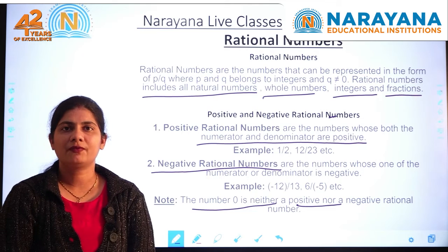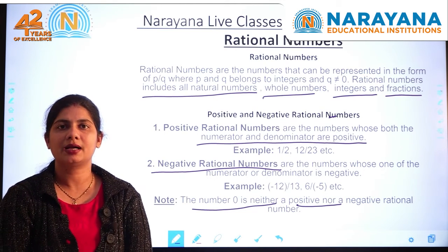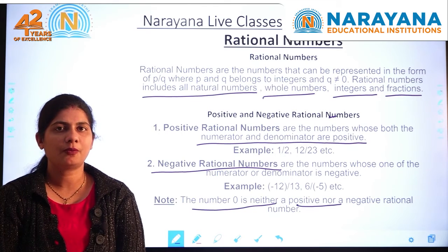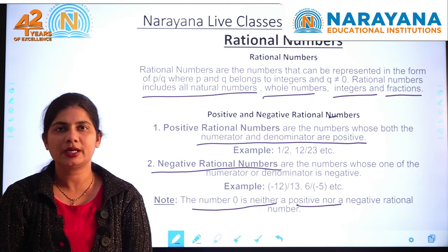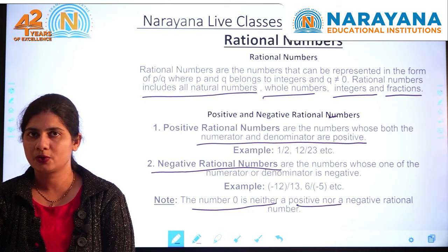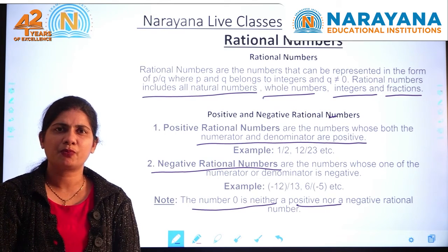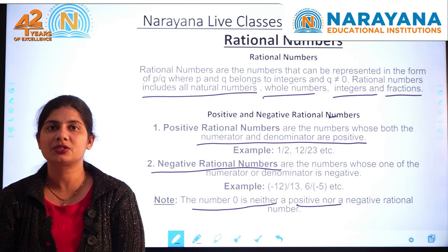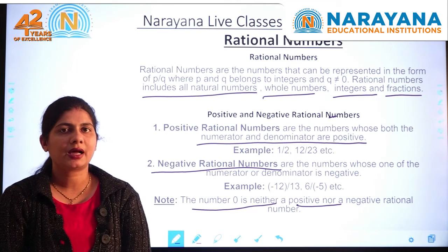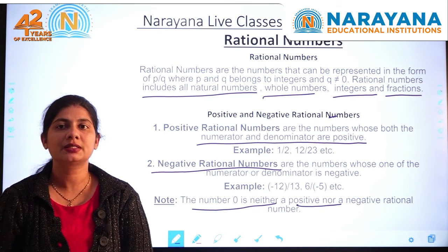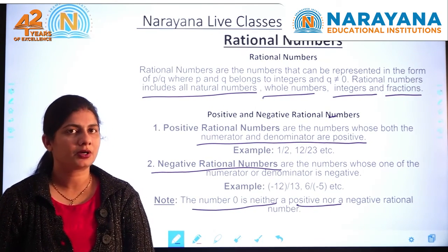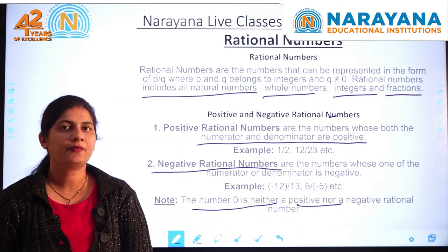Let us recap what we have done. Rational numbers are the numbers which can be written in the form of P by Q where P and Q belong to integers and Q should not be equal to 0. The types of rational numbers: positive rational numbers have numerator and denominator of the same sign, and negative rational numbers have numerator and denominator of different signs.